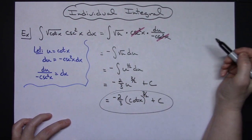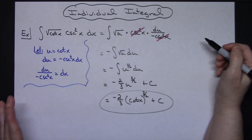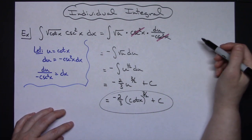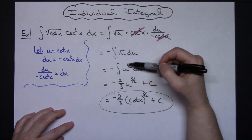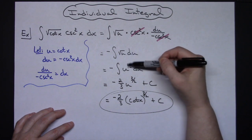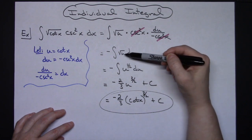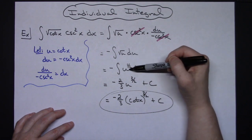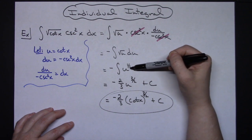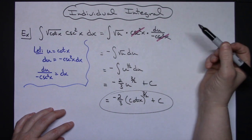A very straightforward u substitution on that integral. About the only thing to remember is to turn that radical into a fractional exponent so that it's easier to integrate.